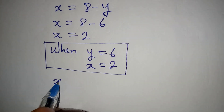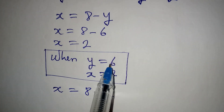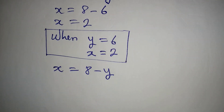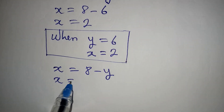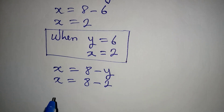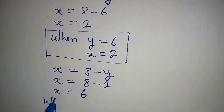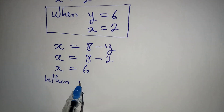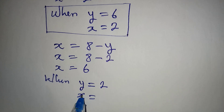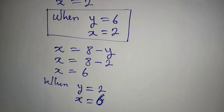We'll get another value of x from the same equation x equals 8 minus y. We've used y as 6, now we use the second value y equals 2. So x equals 8 minus 2, which means x equals 6. Therefore when y is 2, x is 6.